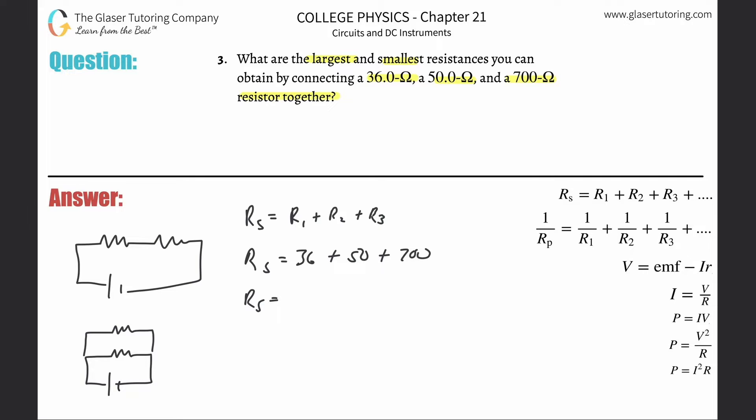So when you add these all together, it's going to be 700 plus 50 which is 750, plus 36 which is 786. So that's 786 ohms. Now in parallel, you're going to see that the math will work out to be less.